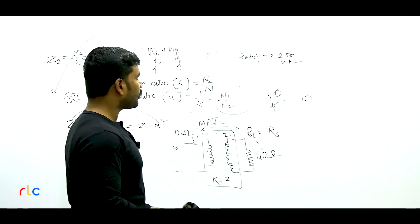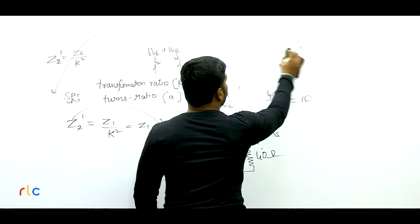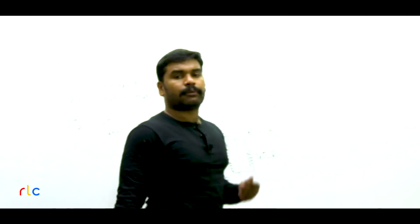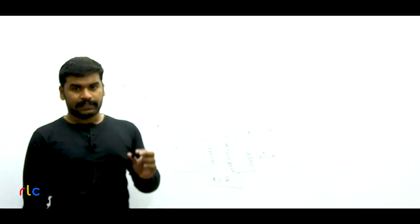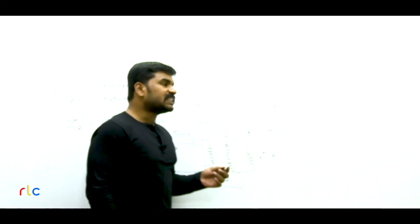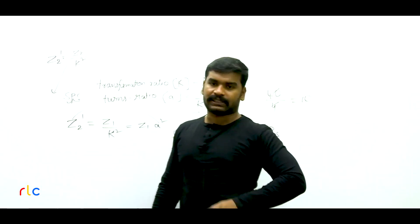Writing in rectangular form: I0 = IC + jIM. So the no-load current equals core loss component plus j times magnetizing current. With respect to supply voltage V1: IC is in phase with V1, and IM is 90 degrees lagging (in quadrature). Option C is correct — IM lags V1 by 90 degrees whereas IC is in phase with V1.